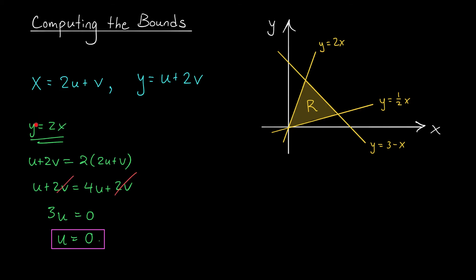My line y = 2x got mapped to the line u = 0 in the uv plane. Very simple line. Let's see if we get just as lucky with our other lines.